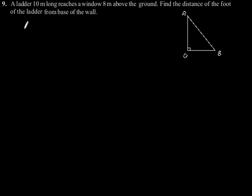Exercise 6.5, question number 9: A ladder 10 meters long reaches a window 8 meters above the ground. Find the distance of the foot of the ladder from the base of the wall. Let us consider this figure which is according to the information given in the question.